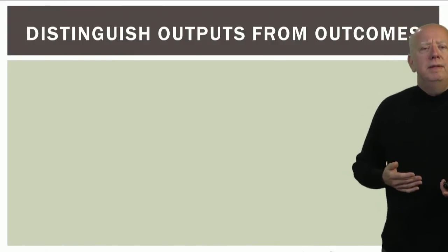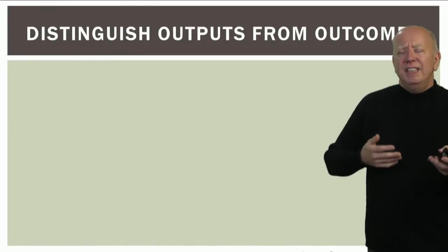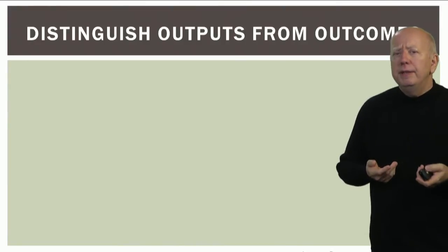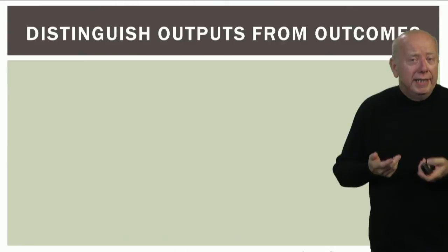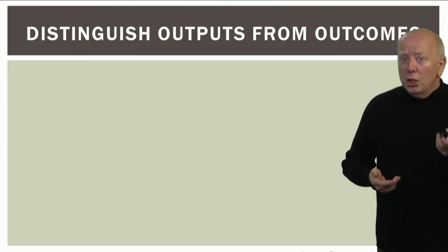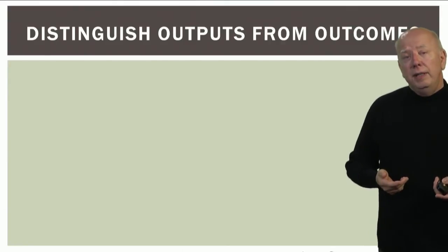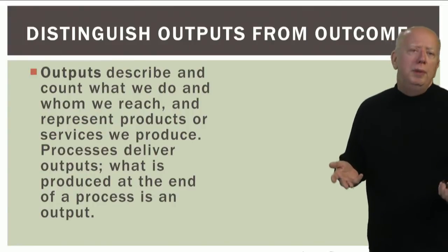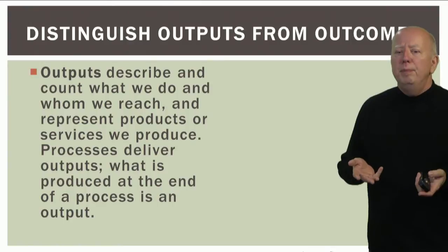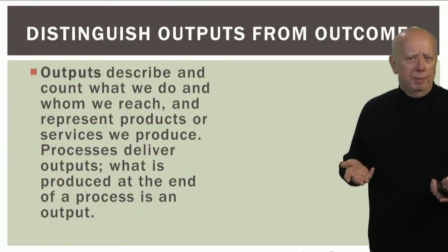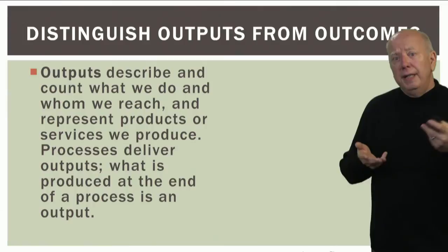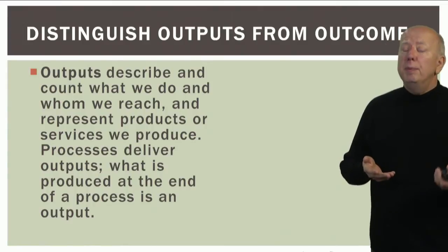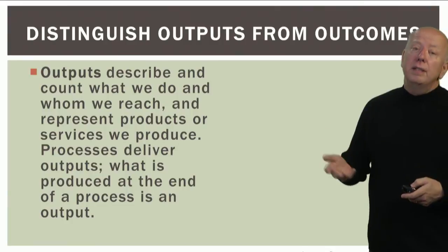Let's work on distinguishing between some terms that sometimes get conflated in our discussions. First, let's talk about distinguishing outcomes from outputs. Outputs basically describe what we do, who we reach, the products or services we produce. Processes deliver outputs — they're things we can count. What's produced at the end of a process is an output.